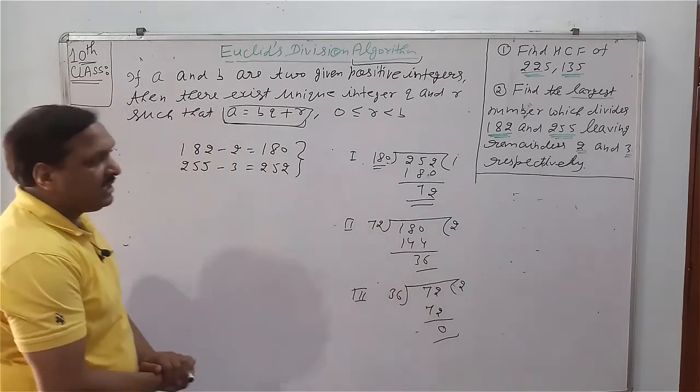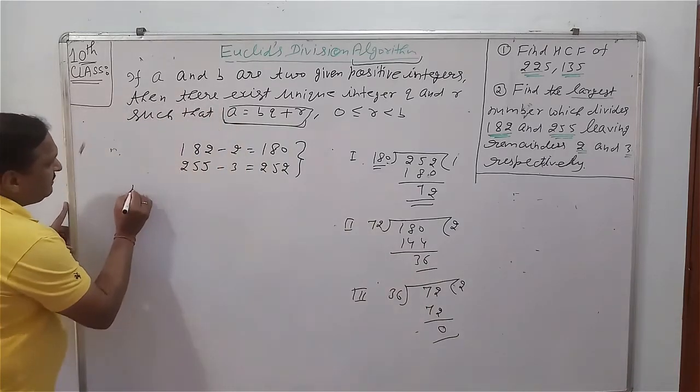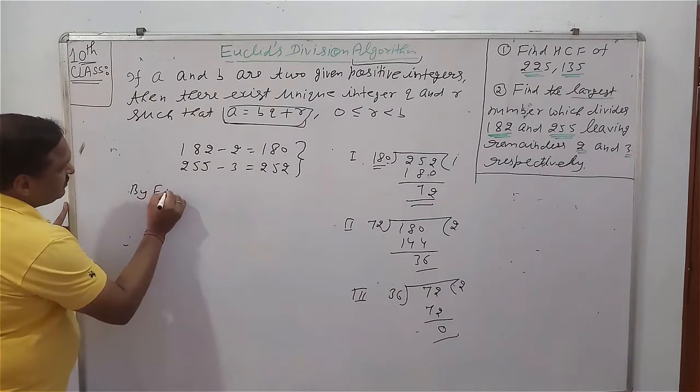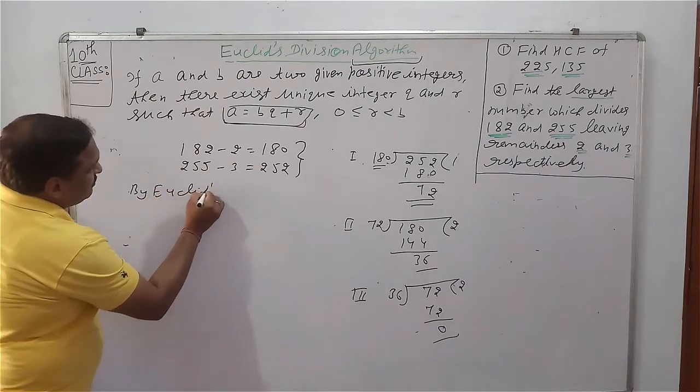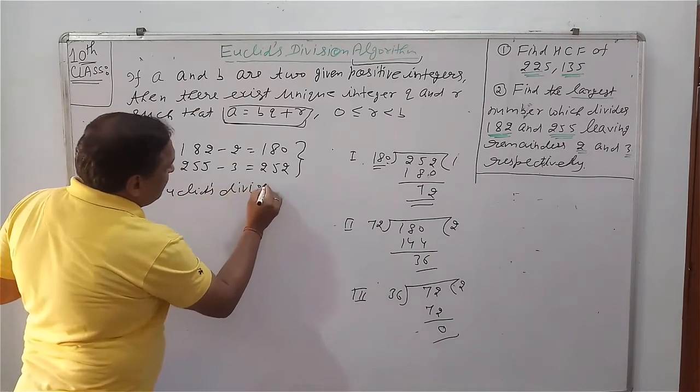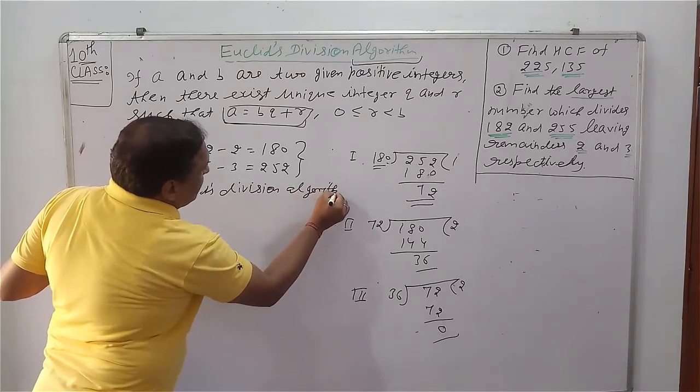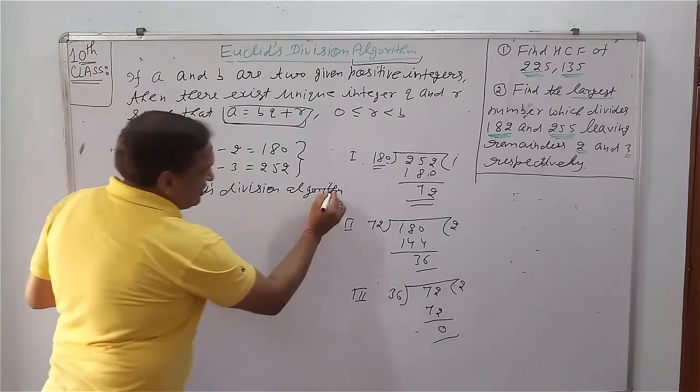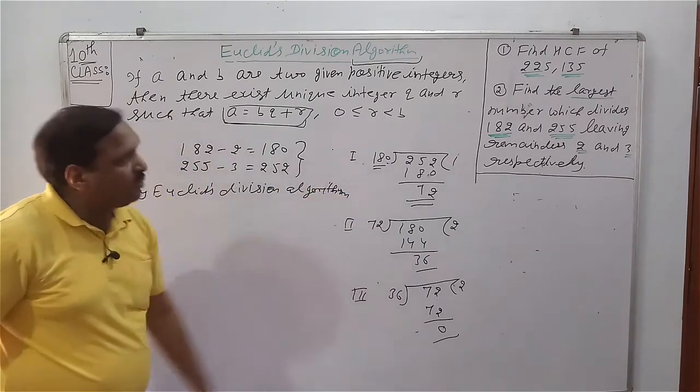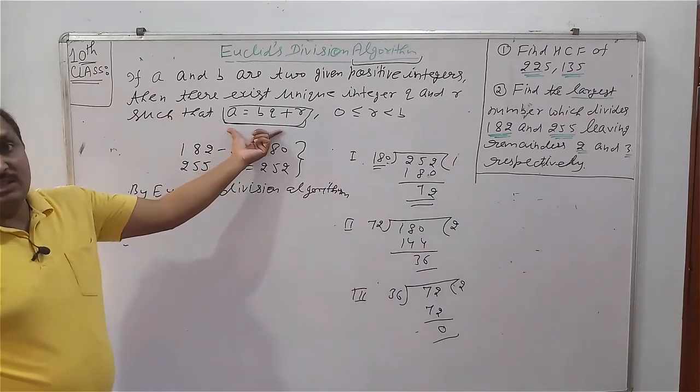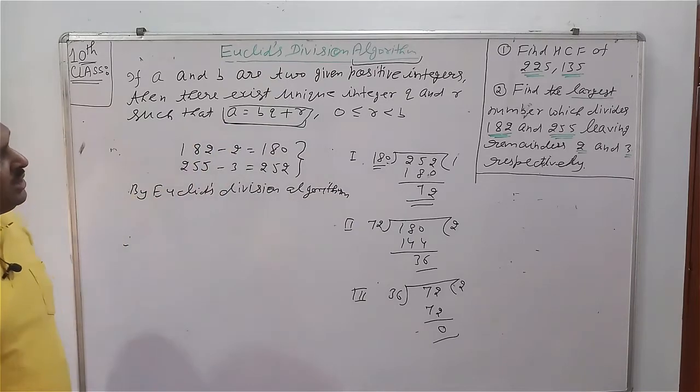Long division method: last divisor 36 is the number that divides. So by Euclid's division algorithm, dear students, now in three steps we will write A is equal to BQ plus R.